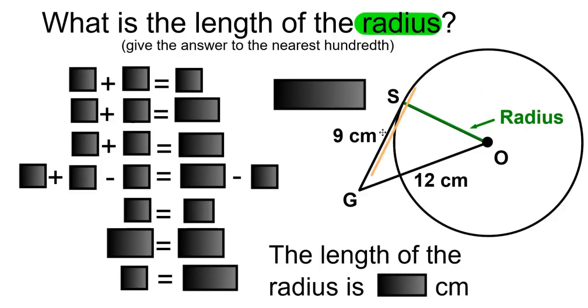Point S to point G will be our tangent. SG is tangent to the circle, with point S being the point of tangency.